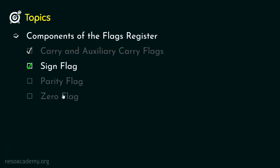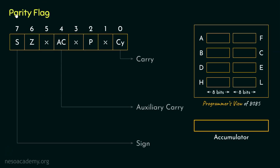That was all about the sign flag. Let's now learn about the parity flag. Coming back to our flags register: bit position number 2 is assigned for P — that is, parity. The job of the parity flag is to find out whether the number of ones in the result stored within the accumulator register is even or odd. Let me illustrate that using an example.